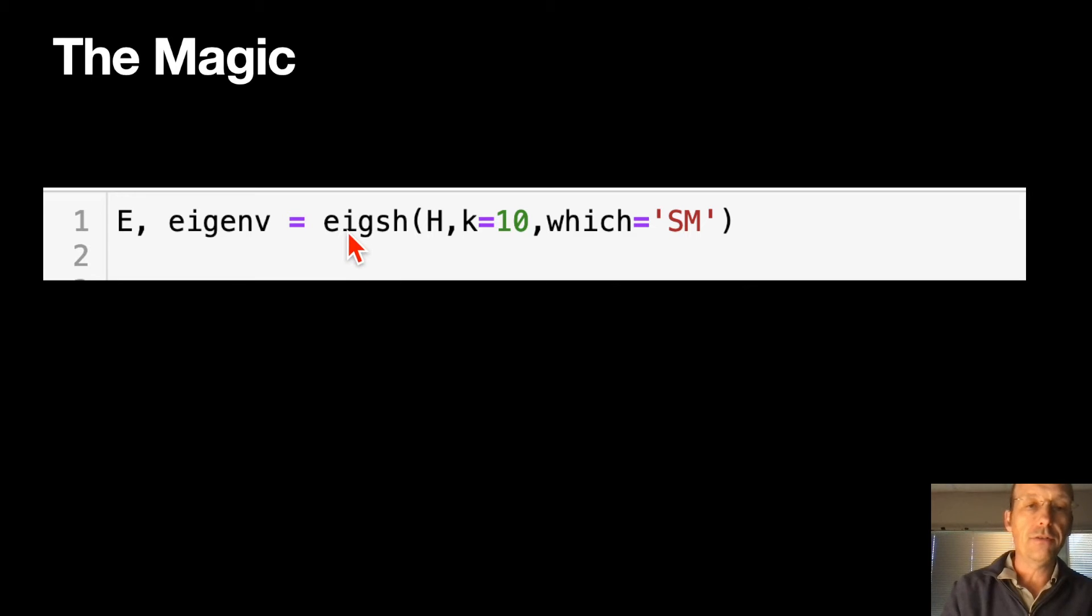Now, here's the magic. Here's the eigenvalue problem. And this is for sparse. That's what the s is for, I think. And I'm going to use the matrix h. I'm going to get 10 terms. You don't want to get all of them, because if I have 100 by 100, that's 10,000ths too big. And I'm going to have two answers. I'm going to have the energy values and I'm going to have the eigenvalues.